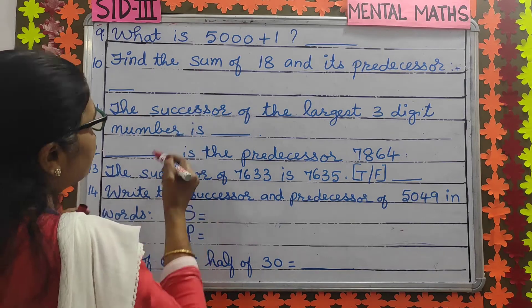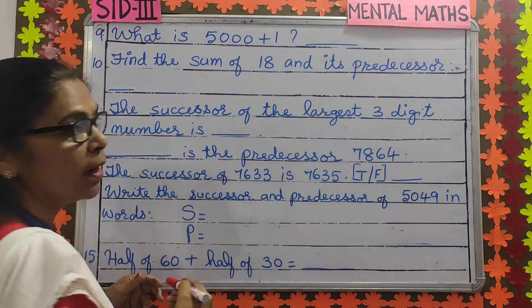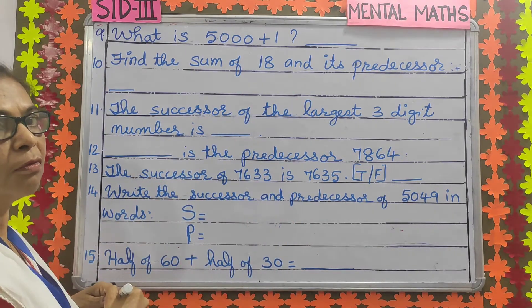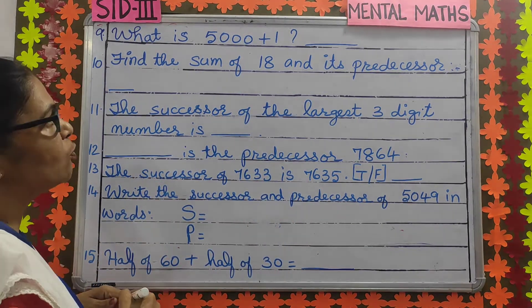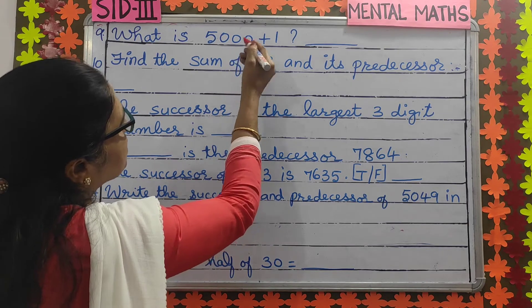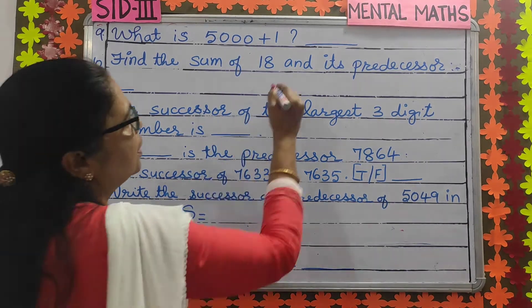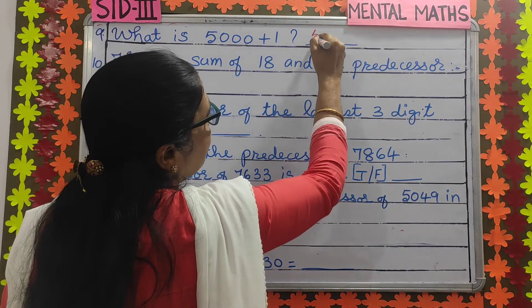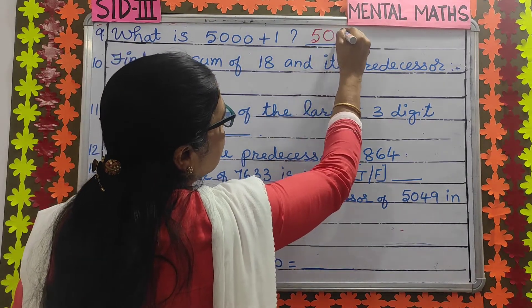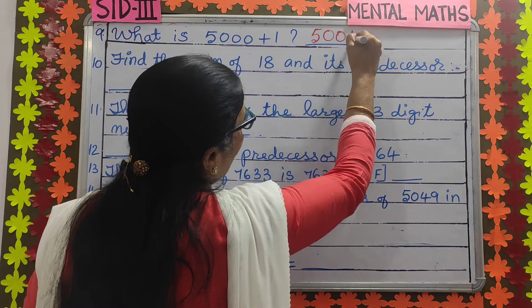Number 9: what is 5,000 plus 1? 5,000 plus 1 means the successor of 5,000 is 5,001.